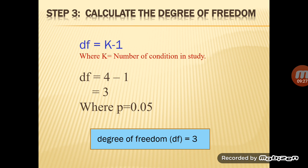The third step is to calculate the degree of freedom. The formula is DF = K − 1, where K is the number of conditions in the study. With 4 categories, DF = 4 − 1 = 3. Our P value is 0.05.